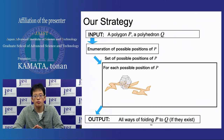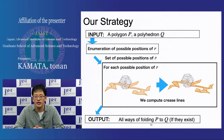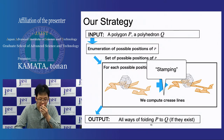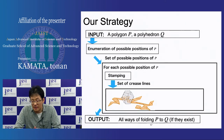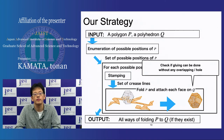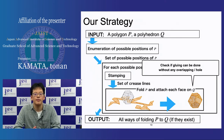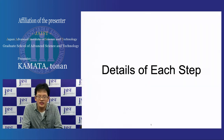After the enumeration of the possible positions of the polygon, for each possible position, we compute the crease lines. This is done by stamping. After the crease lines are determined, we fold the polygon along the crease lines and attach each face of the polyhedron. Here is the outline of our algorithm. Next, I'll talk about the details of each step.